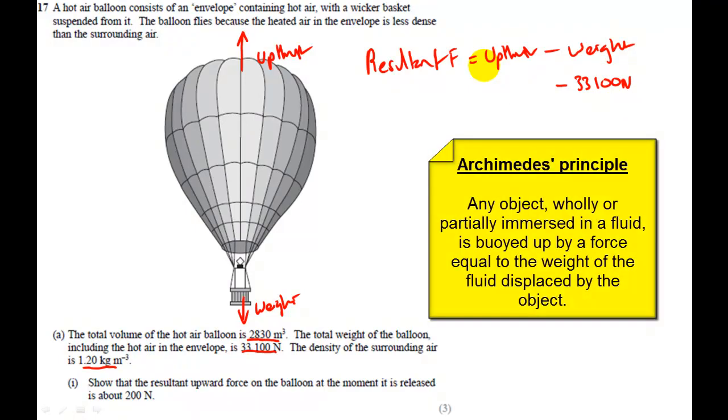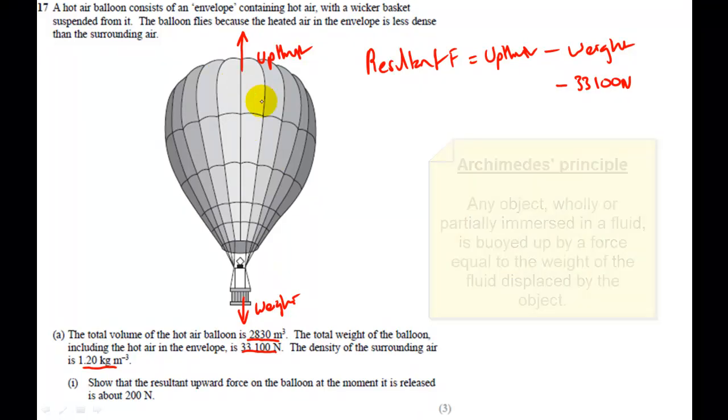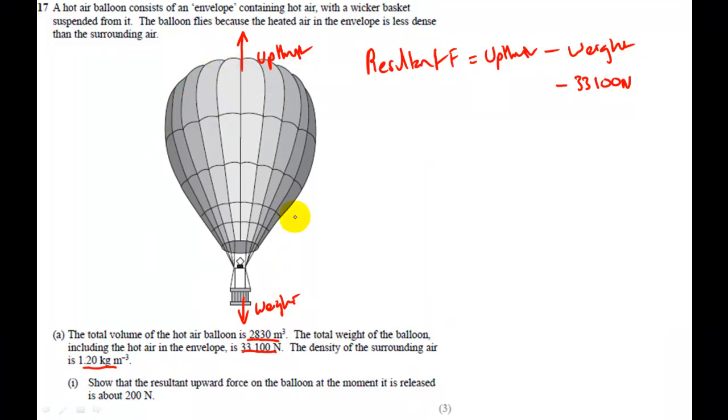Now Archimedes principle states that the weight of whatever you displace, so this balloon is displacing air, is the up thrust you'll experience. So this big volume here is displacing a big volume of air. That volume of air will have a certain amount of weight and that weight will be exactly equal to the up thrust on the balloon. So what we need to do is come up with an expression that will give us that weight of air.